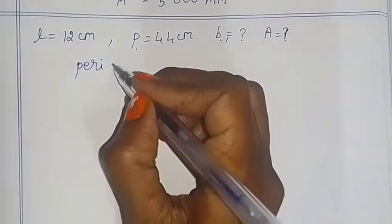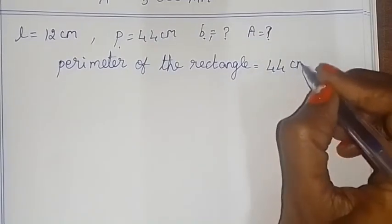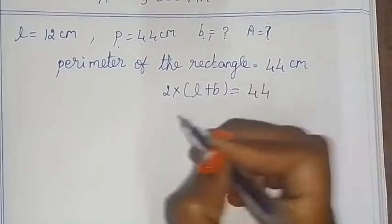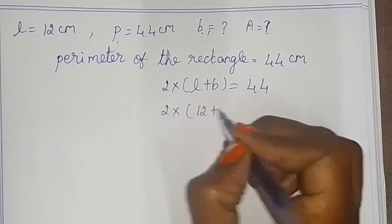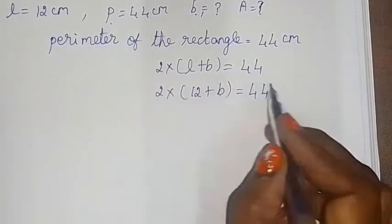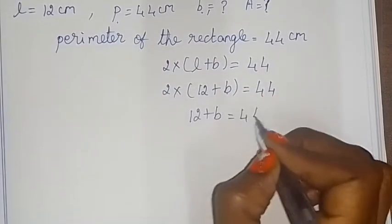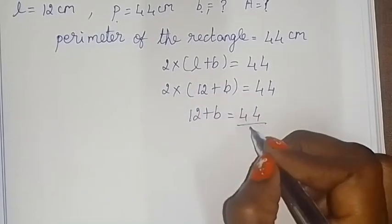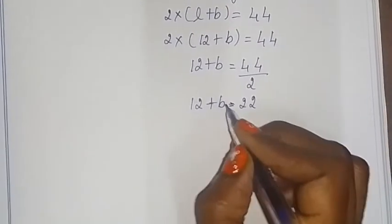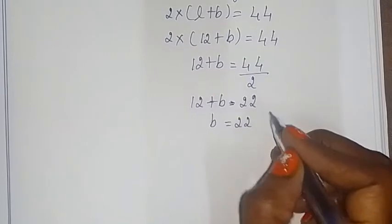In the fourth rectangle, the perimeter is 44 cm and the length is 12 cm. Perimeter formula: 2 into (L + B) = 44. So 2 into (12 + B) = 44. Dividing both sides by 2, 12 + B = 22. So B = 22 - 12 = 10 cm.